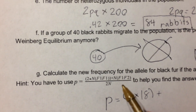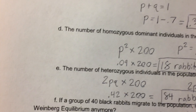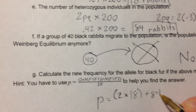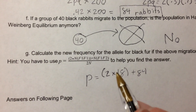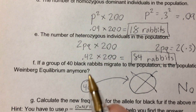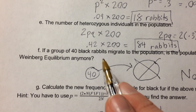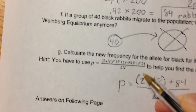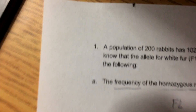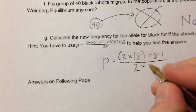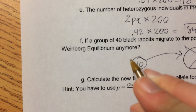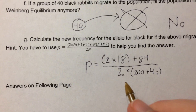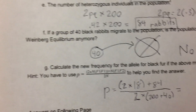Plus the number of individuals with the F1F2 genotype — that's 84 rabbits, the number of heterozygous individuals. Note that the 40 black rabbits that migrated have not yet affected either of these two values, because the black rabbits correspond with the homozygous recessive individuals. We divide this by 2 times the total population, which is no longer 200 rabbits but now 200 plus 40, making the total population 240.